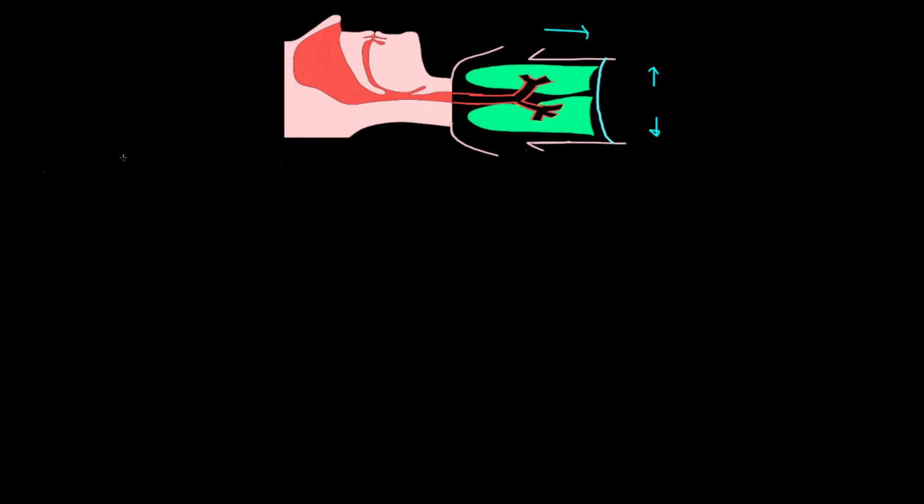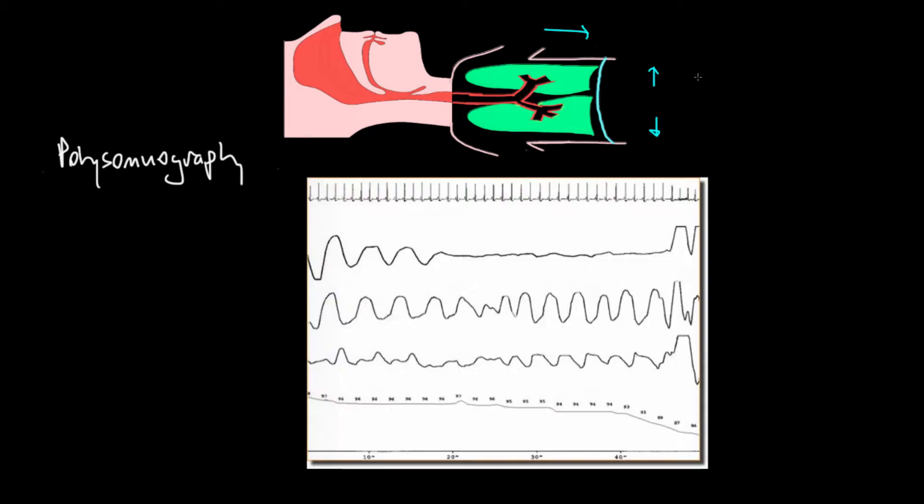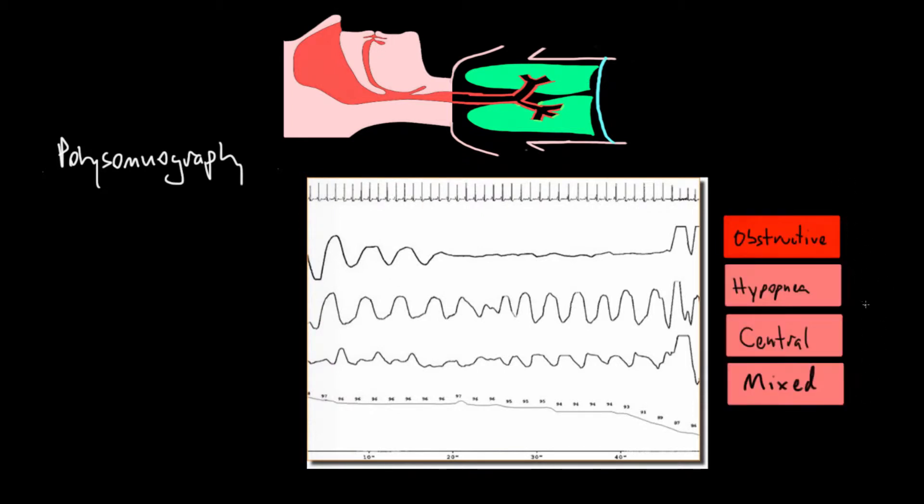The only way to definitively determine if someone has obstructive sleep apnea is to do what's called a sleep study. This gets a special name - it's called polysomnography. When you do the graphs, it looks something like this. We'll walk through exactly the details of this graph and what it means. There are four different types of respiratory events you might see when you're monitoring someone overnight. We'll go through each of these four types: obstructive, hypopnea, central, and mixed. This graph has a lot of lines on it, and they each mean something important.